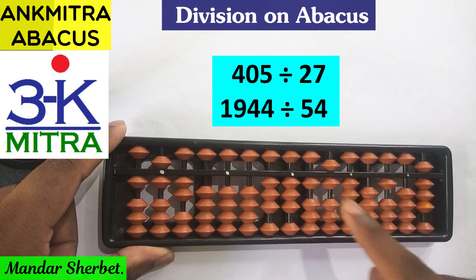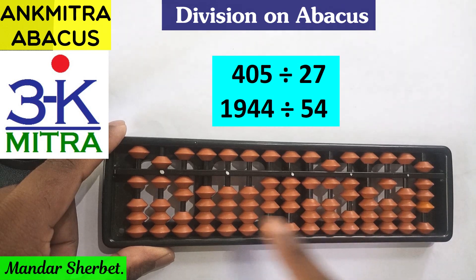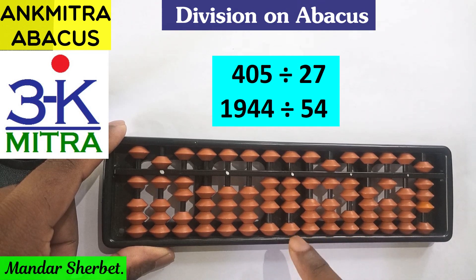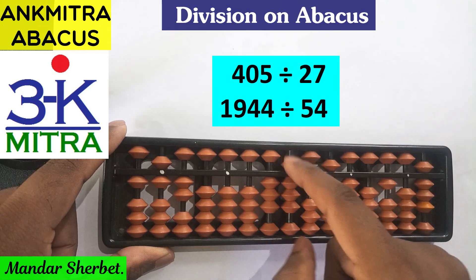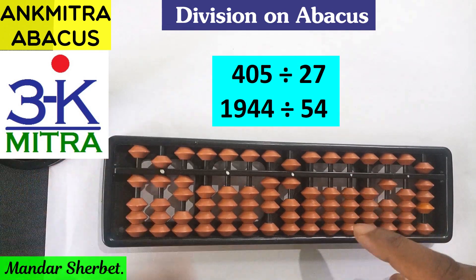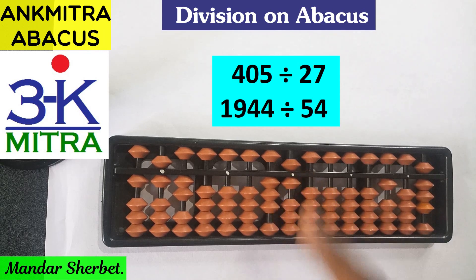Subtracting 162 from 324: plus 4 minus 10 for subtracting 6, then subtract 2. After this, we still have 162 remaining on the question set, so another three times of 54 can be subtracted. We add another 3 on the same units-place rod: plus 5 minus 2, then subtract 162. The question set is completely subtracted with no remainder. The final answer for 1944 divided by 54 is 36.